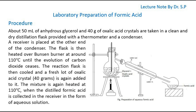A fresh lot of oxalic acid crystals, about 40 grams, is again added to the flask. The mixture is again heated at 110 degrees Celsius, and the distilled formic acid is collected in the receiver in the form of an aqueous solution.